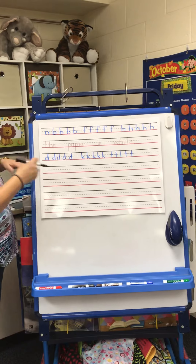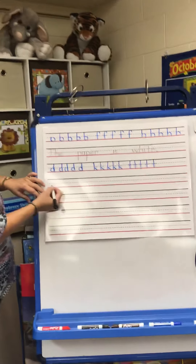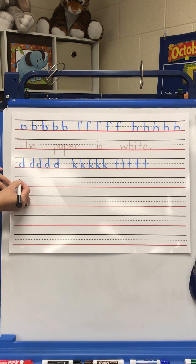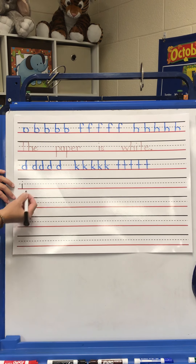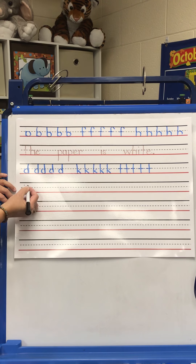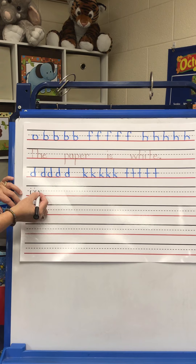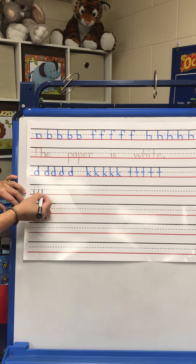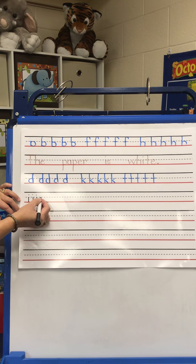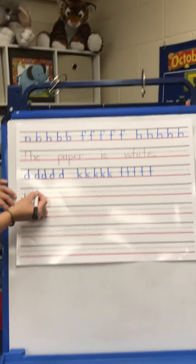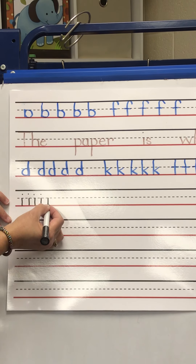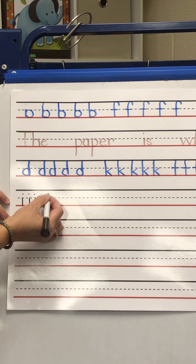First, we're going to write I. It starts on the dotted line. Little line down, dot. Make another lowercase I - little line down, dot. Make sure you're starting on the dotted line and stopping at the red line, dot. The letter I - little line down, dot. One more lowercase I - little line down, dot.